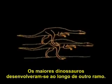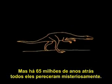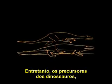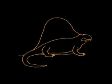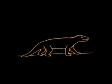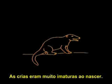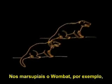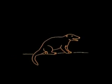The great dinosaurs evolved along another branch. Some were the largest flesh-eaters ever to walk the land. But 65 million years ago, they all mysteriously perished. Meanwhile, the forerunners of the dinosaurs were also evolving in a different direction — small, scurrying creatures, with the young growing inside the mother's body. After the extinction of the dinosaurs, many different forms developed. The young were very immature at birth: in the marsupials, the wombat for example, and in the mammals. The young had to be taught how to survive. The brain grew larger still.